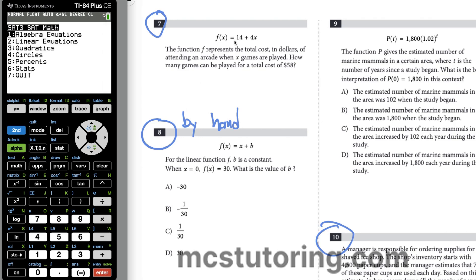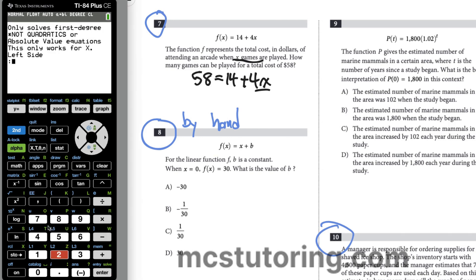The function f represents total cost in dollars of attending an arcade when X games are played. How many games can be played for a total cost of 58? Basically we're saying f of X equals 58. So we're going to set 58 equals to 14 plus 4X, because it says when X games are played and we're trying to solve for the X value. Go to algebra equations, solve the equation. The left-hand side will be 58, and the right side will be 14 plus 4 and then the X key. We get X equals 11. That will be our answer, the student-produced response.